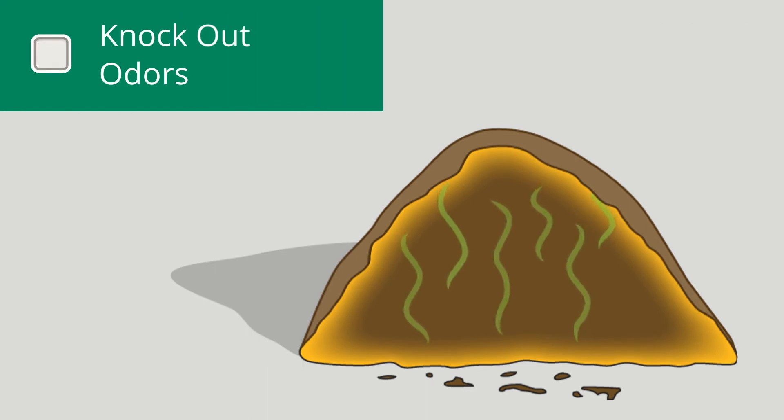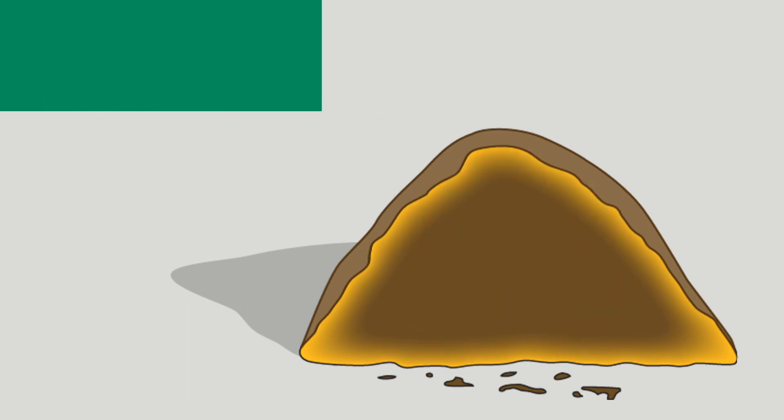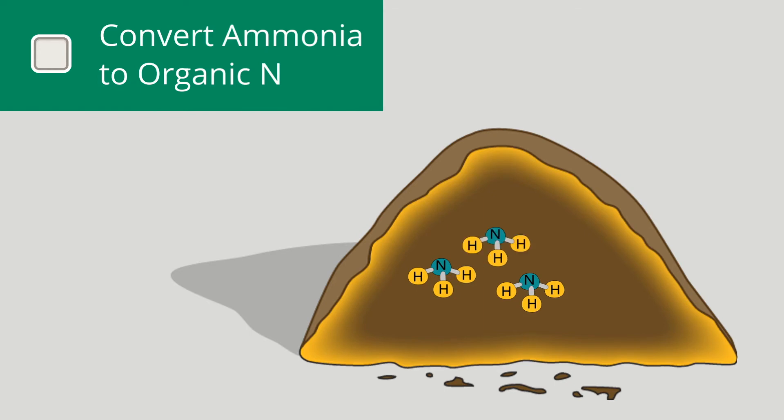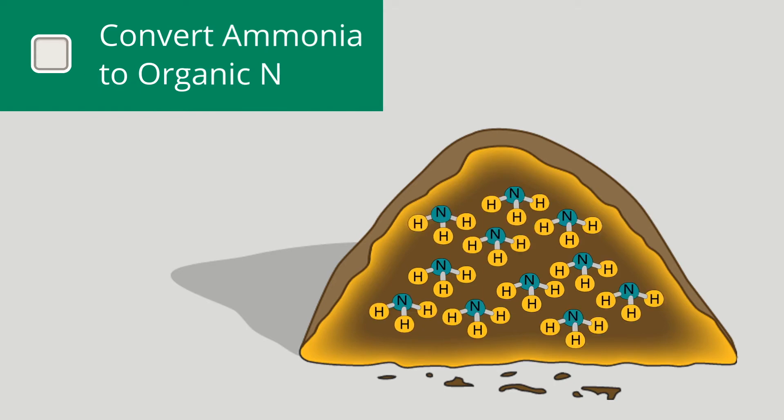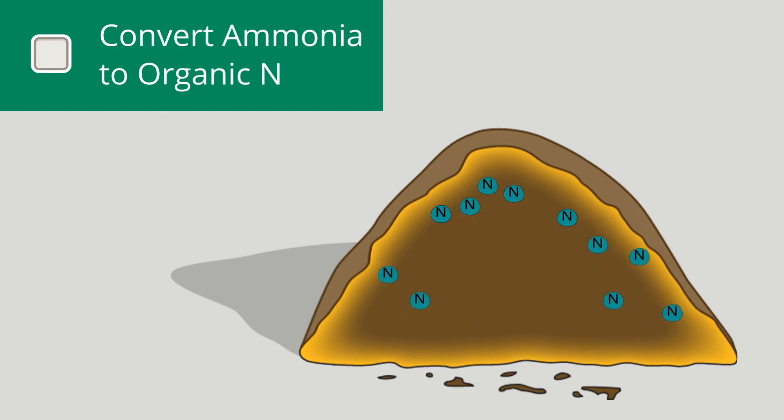As a result, ammonia volatilization is significantly reduced and your compost windrow no longer emits odors during the process. And because ammonia is retained in your compost windrows so much longer, the Harvest Quest microbes are able to convert it to organic nitrogen, resulting in a compost with much higher commercial value.